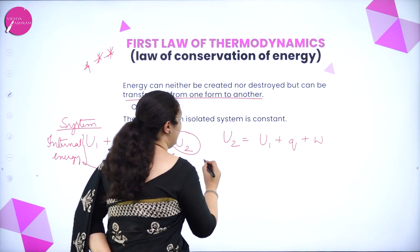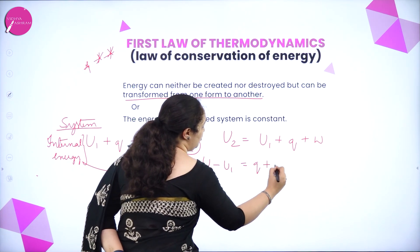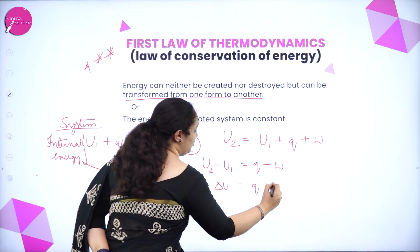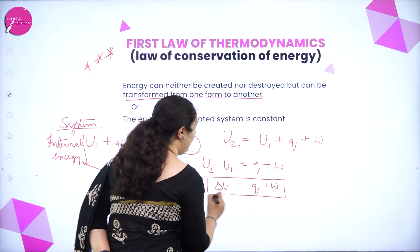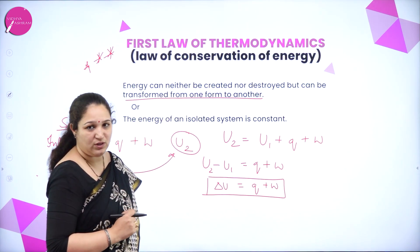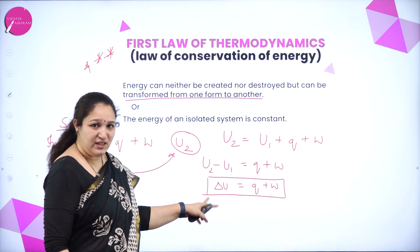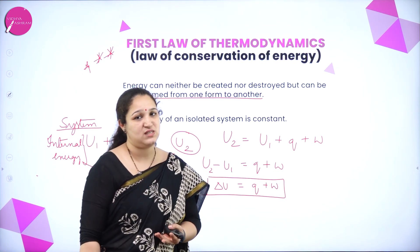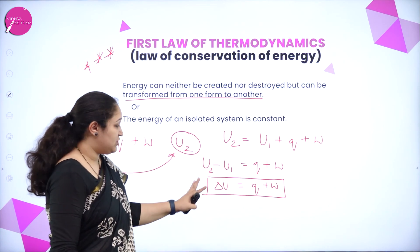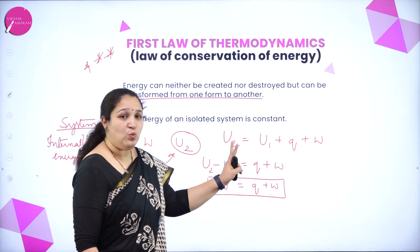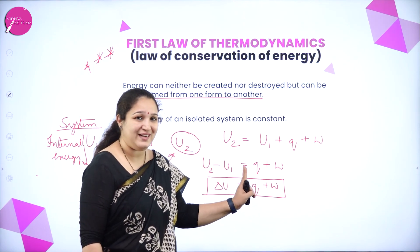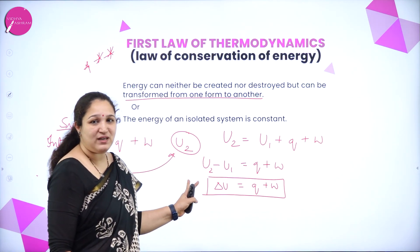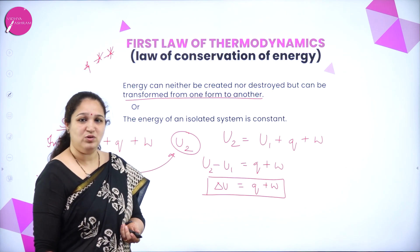Rearranging, U2 minus U1 equals delta U, which is equal to Q plus W. This is the mathematical form of the first law of thermodynamics: the change in internal energy is equal to heat absorbed by the system plus work done on the system. This is the mathematical form of the first law of thermodynamics.